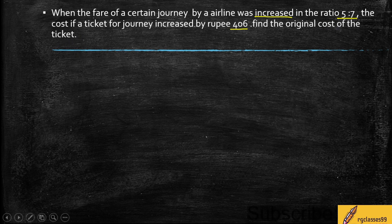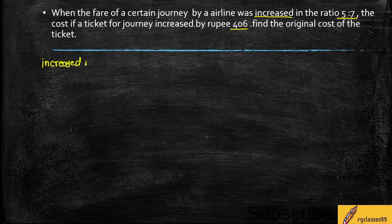What is the original cost of the ticket? This is a very good question. Let's see here. What's happening here? The increase is in ratio — how has it increased? It increased in ratio 5 to 7.